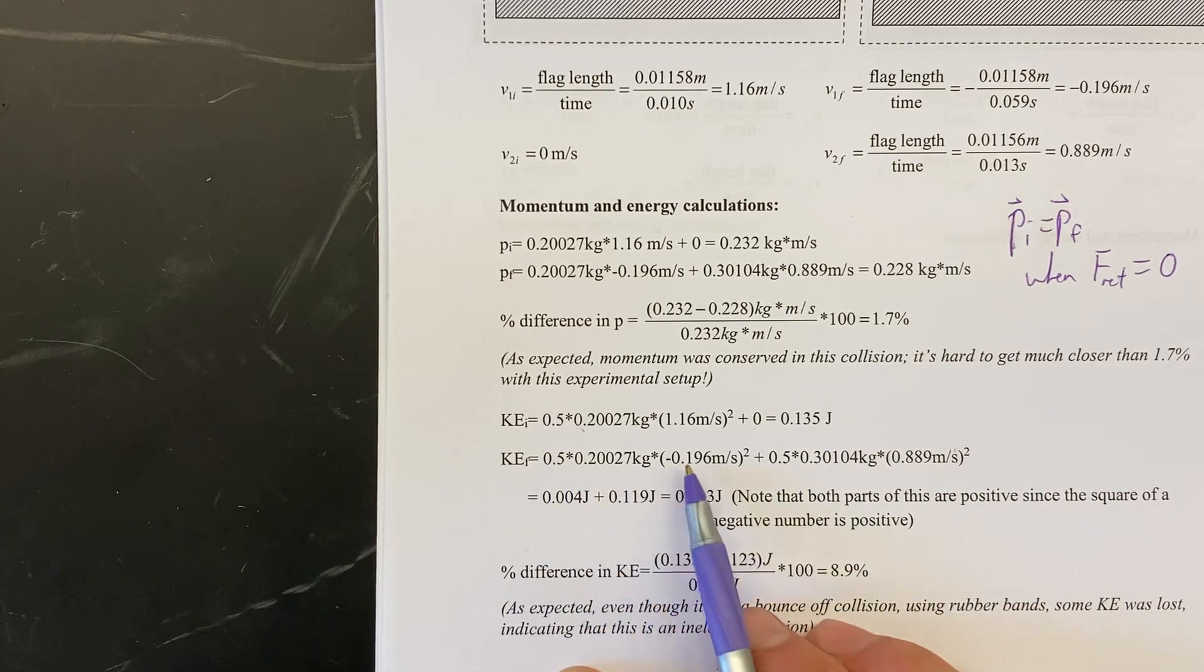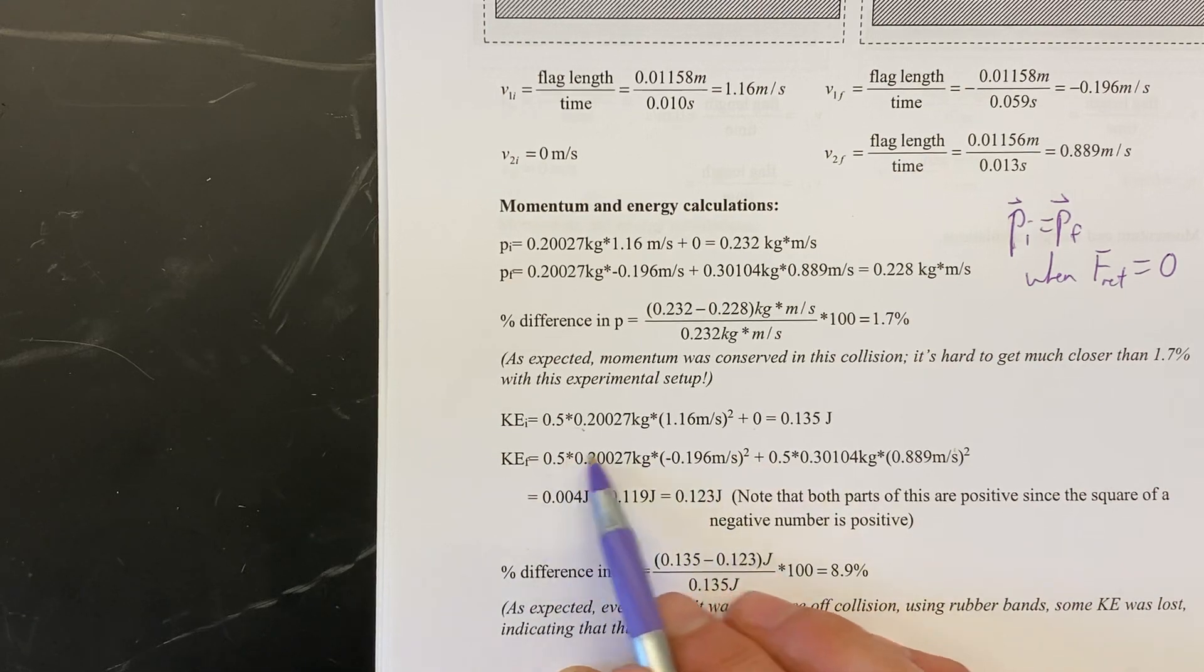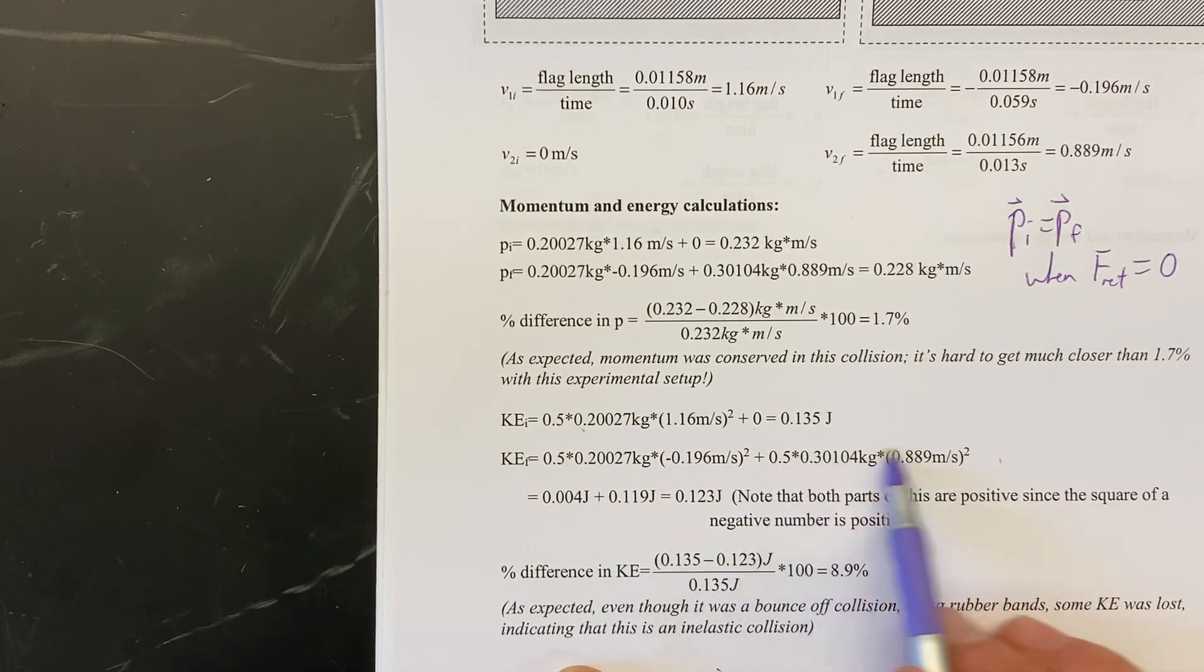After the collision we had glider one moving to the left. Not that it matters because we're going to square this but this is the kinetic energy of glider one, this is the kinetic energy of glider two.